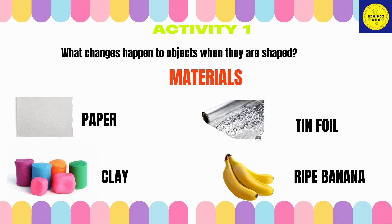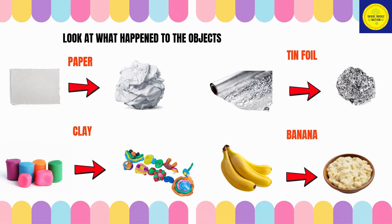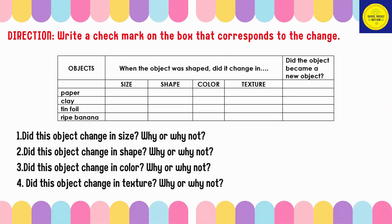For our first activity, prepare the following materials: paper, clay, tin foil, and ripe banana. What changes happen to objects when they are shaped? Look at what happened to the objects. Did the paper, clay, tin foil, and banana change shape? Complete this table — write a check mark on the box that corresponds to the change of paper, clay, tin foil, and ripe banana.